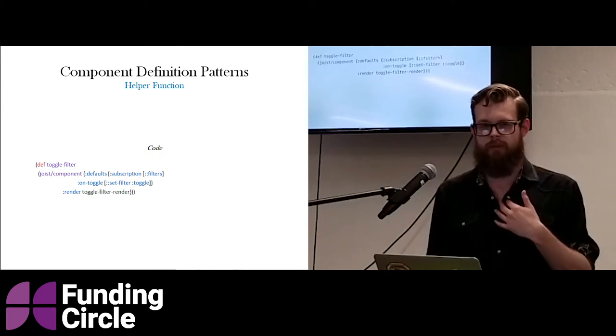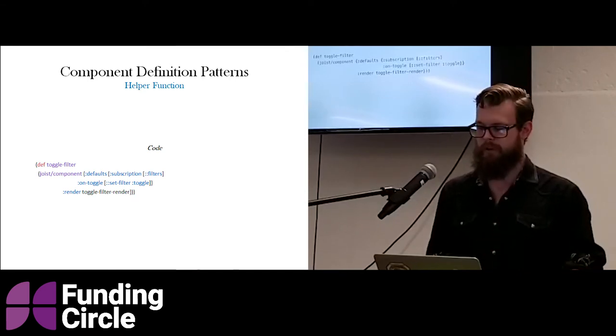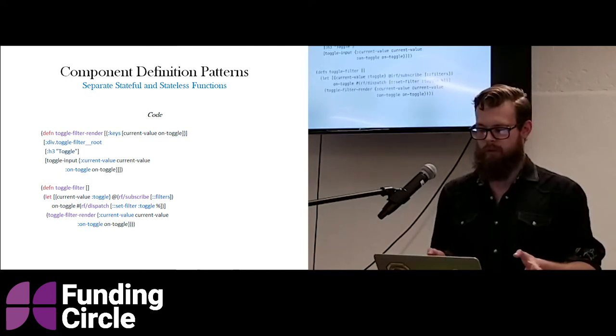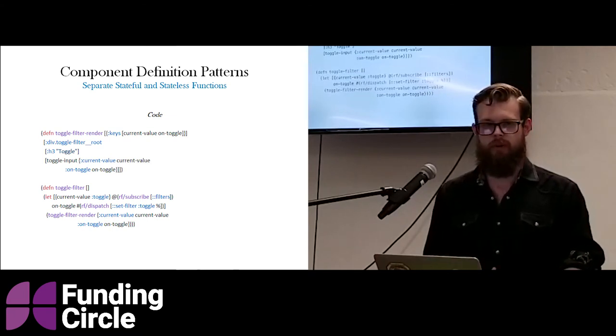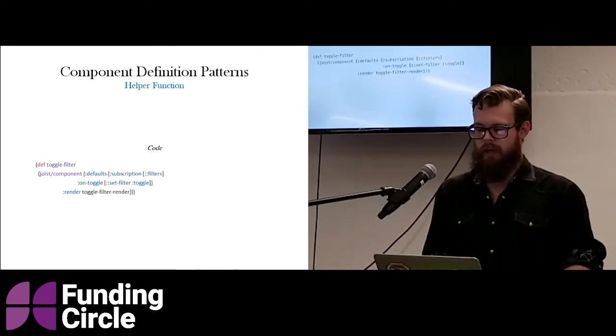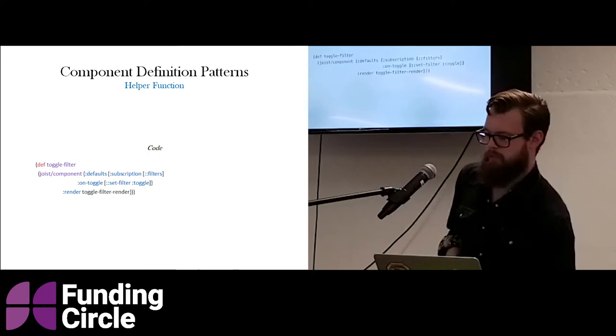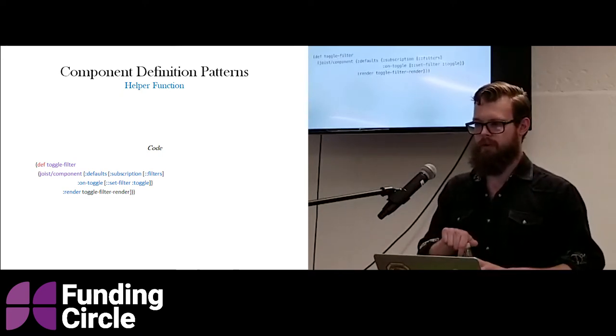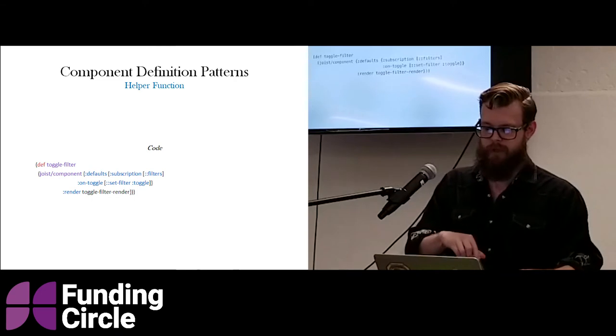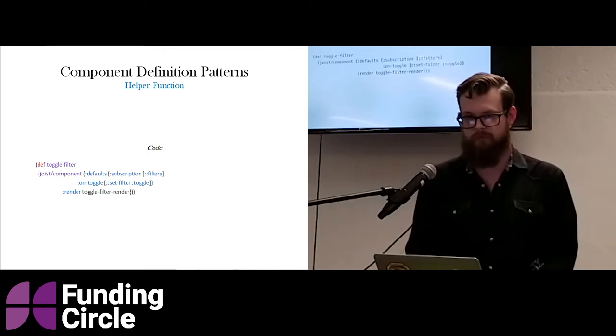The next level of this is just an optimization. At Funding Circle, we made a little library called Joyce, and basically it has one function in it called component right now. And the purpose of that function is to get rid of the boilerplate. So, you can tell it what's your subscription for this component, and what are some default parameters. In this case, we can pass Reframe events as default parameters. And it'll return a component just like any other component function. The thing to keep in mind is this isn't meant to be a framework or anything, it's just a helper function.